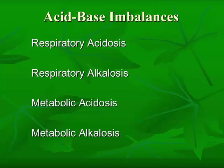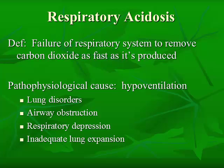We have four imbalances to look at. With respiratory acidosis, the definition is a failure of the respiratory system to remove carbon dioxide as fast as it's produced. The pathophysiological cause is usually hypoventilation, which results in increased CO2 leading to a decreased pH. Some causes include lung disorders such as COPD, asthma, pneumonia, pulmonary edema, and ARDS — all diseases and situations which impede the ability of the body to exchange gases across the permeable membrane.